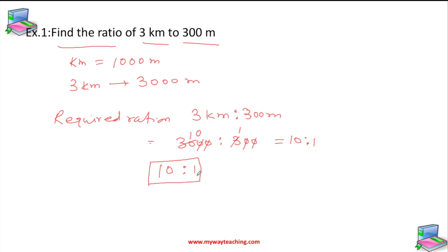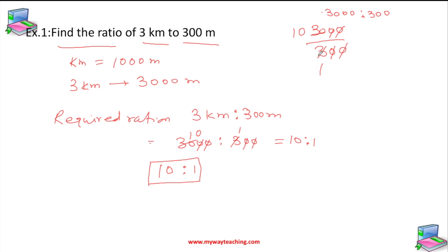Here is another simple way to solve it. If 3000 is to 300, we can write it in fraction form as 3000 over 300. Cancel two zeros — this zero and this zero — leaving 30 over 3. Then divide 30 by 3 to get 10 by 1, which we can write as 10 is to 1. So the ratio of 3 kilometers to 300 meters is 10 is to 1.